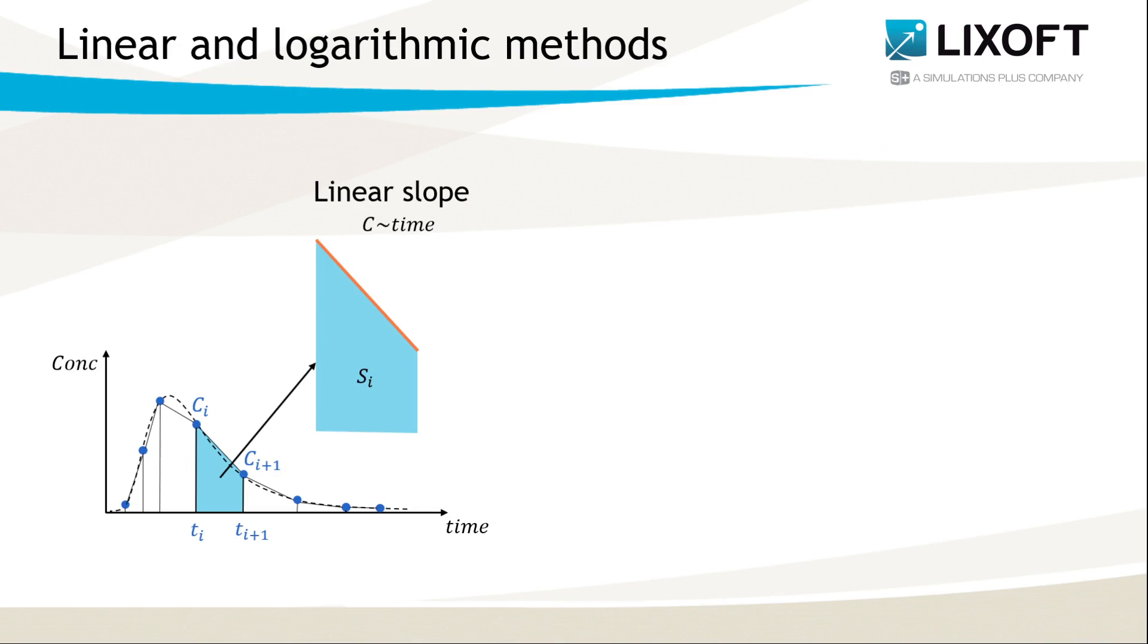In the linear method, we assume that the concentration changes linearly between two observation points, so the slope of each sub-area is linear. It gives a trapezoid which area can be calculated with a standard formula given here.